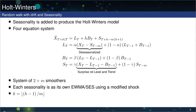Starting from the top with the forecasting equation: X_{T+H} depends on the level, H times the trend — no difference there from Holt's method. But now we add a new term, S_{T+H-mk+1}, where k is defined as the floor of (H-1)/m. This rolls us around the seasonal forecasts. The level equation gets modified: it's still an exponential smoother, but the shock is X_T minus S_{T-m} — that is, minus the previous seasonal component m periods ago.